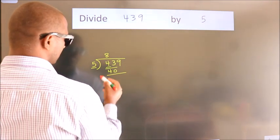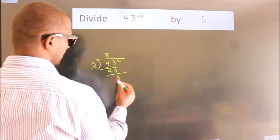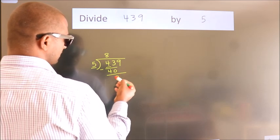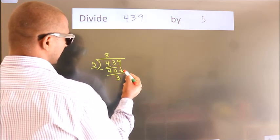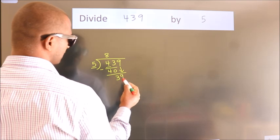Now, we should subtract. We get 3. After this, bring down the beside number. So 9 down. So 39.